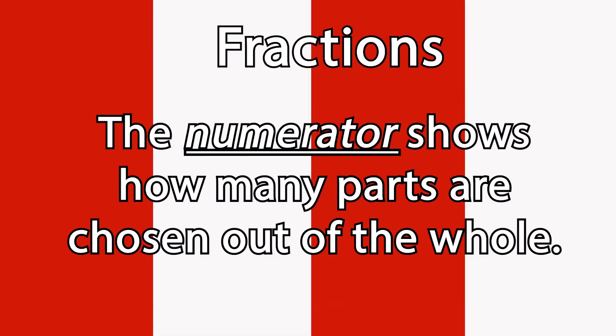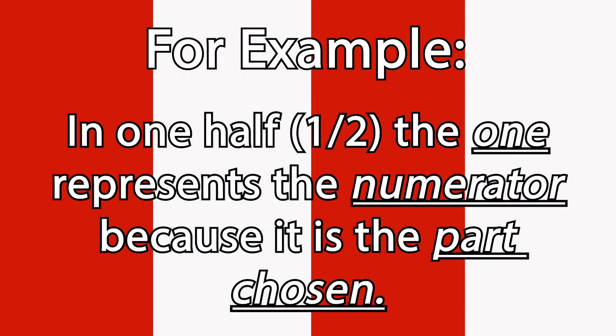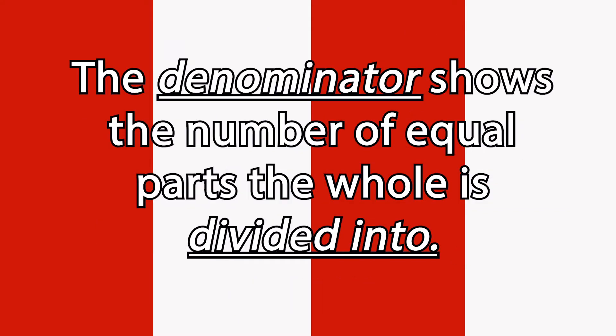The numerator shows how many parts are chosen out of the whole. In one half, the one represents the numerator because it is the part chosen. The denominator shows the number of equal parts the whole is divided into.